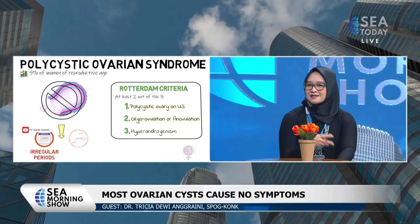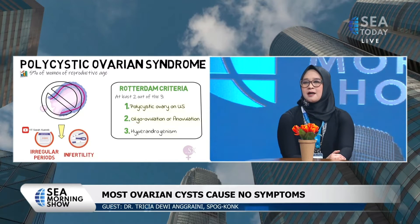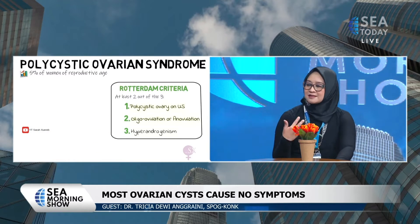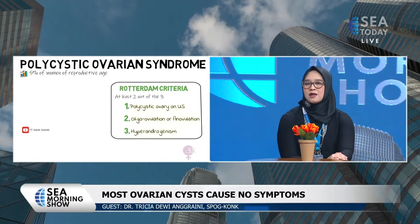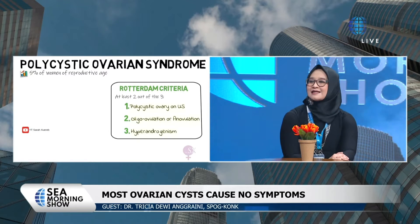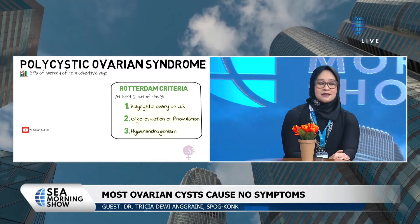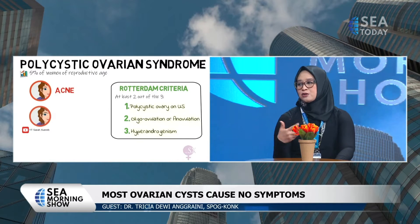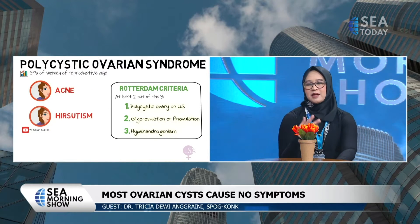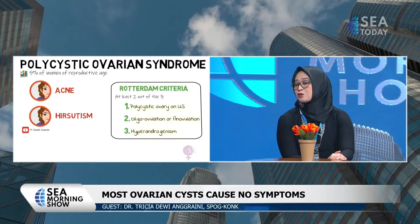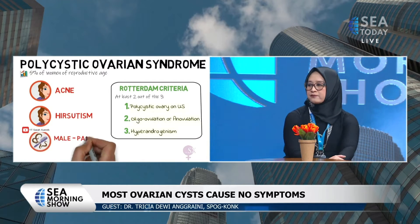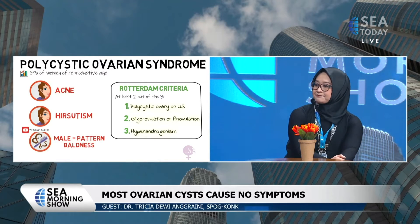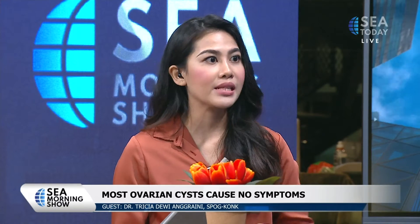Polycystic Ovarian Syndrome can involve excessive insulin — what we call insulin resistance — or diabetes. Food intake and lifestyle are a part of it. Sometimes it's related to a hyperestrogenic condition. So it seems like it's a combination of lifestyle factors affecting your hormones, and then affecting what happens inside as well.